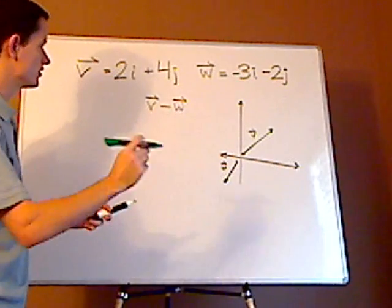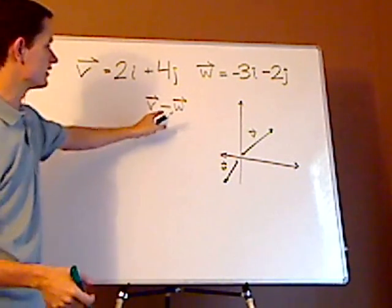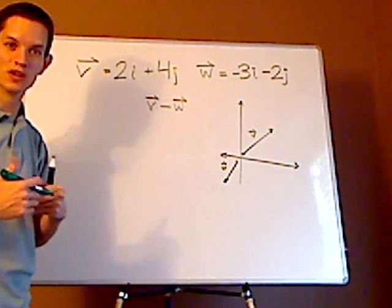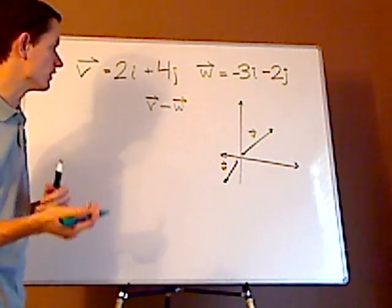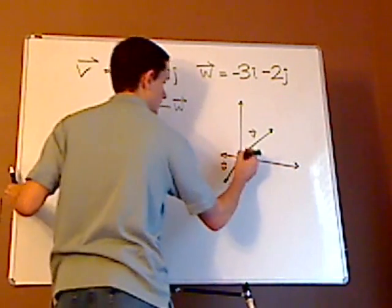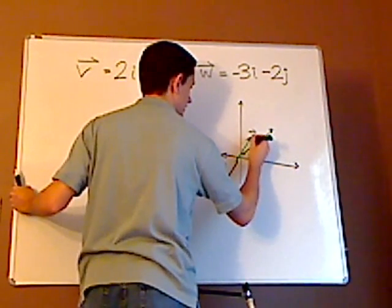Vector w switches directions, because that's where the negative is at. So you're taking a negative 1 scalar, and you're multiplying it through, which makes these both positive.